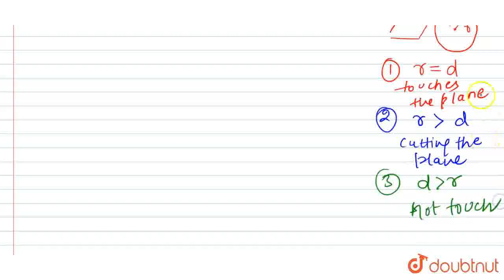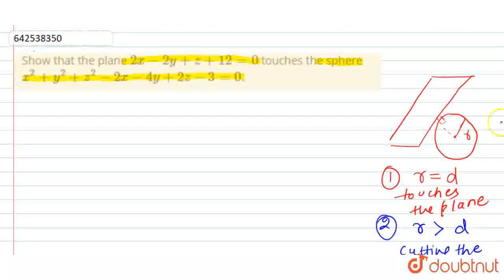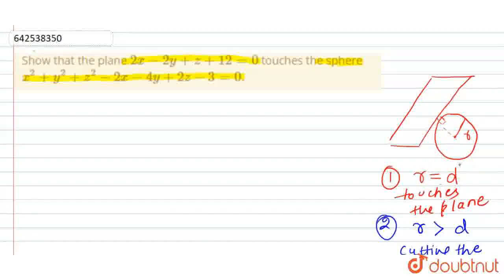So these are the conditions. In this question we have to show whether the sphere touches the plane or not. For this condition to be satisfied, our radius should be equal to the perpendicular distance between the sphere and the plane.